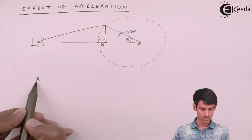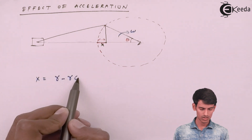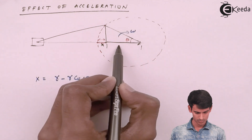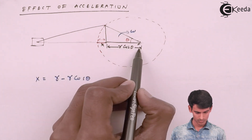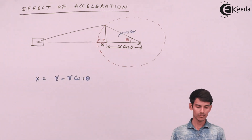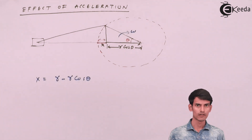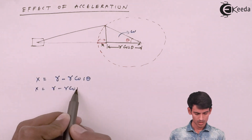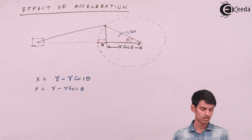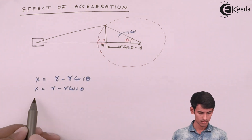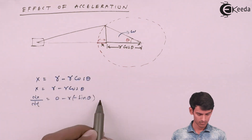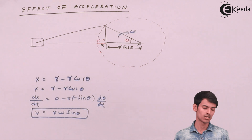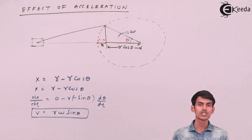x is nothing but r minus r·cosθ. The total length is r and we calculate x as r minus r·cosθ, giving us the displacement of the piston or slider. Now we calculate the velocity by differentiating the displacement equation. After differentiating the displacement, we get the velocity. And after differentiating the velocity, we get the acceleration.